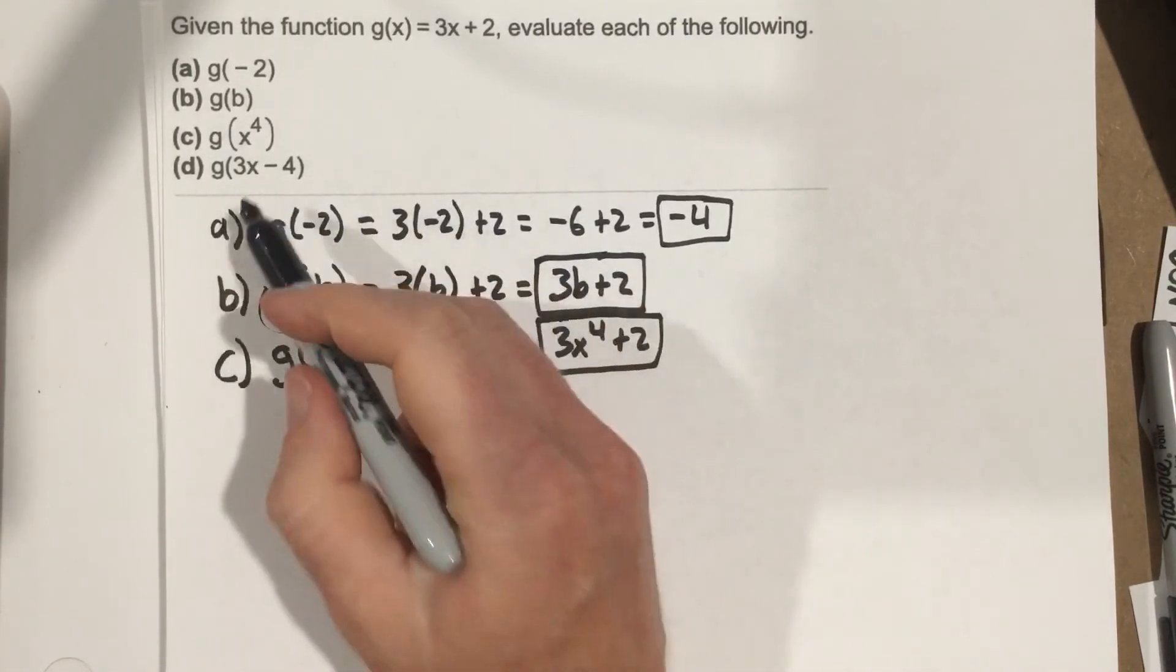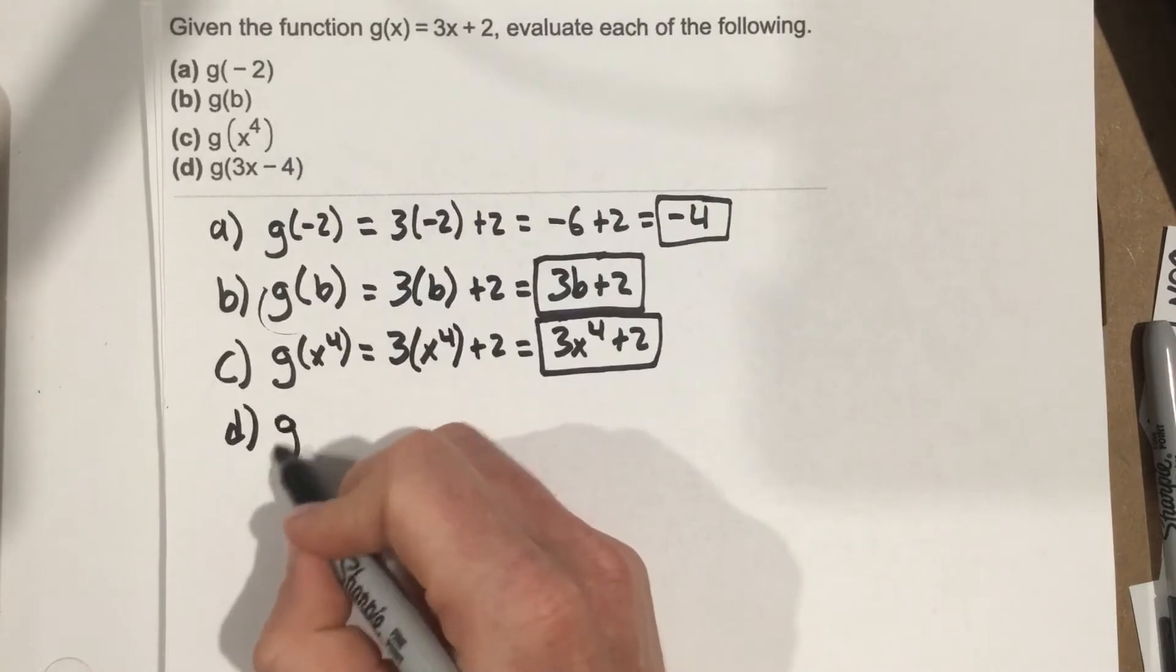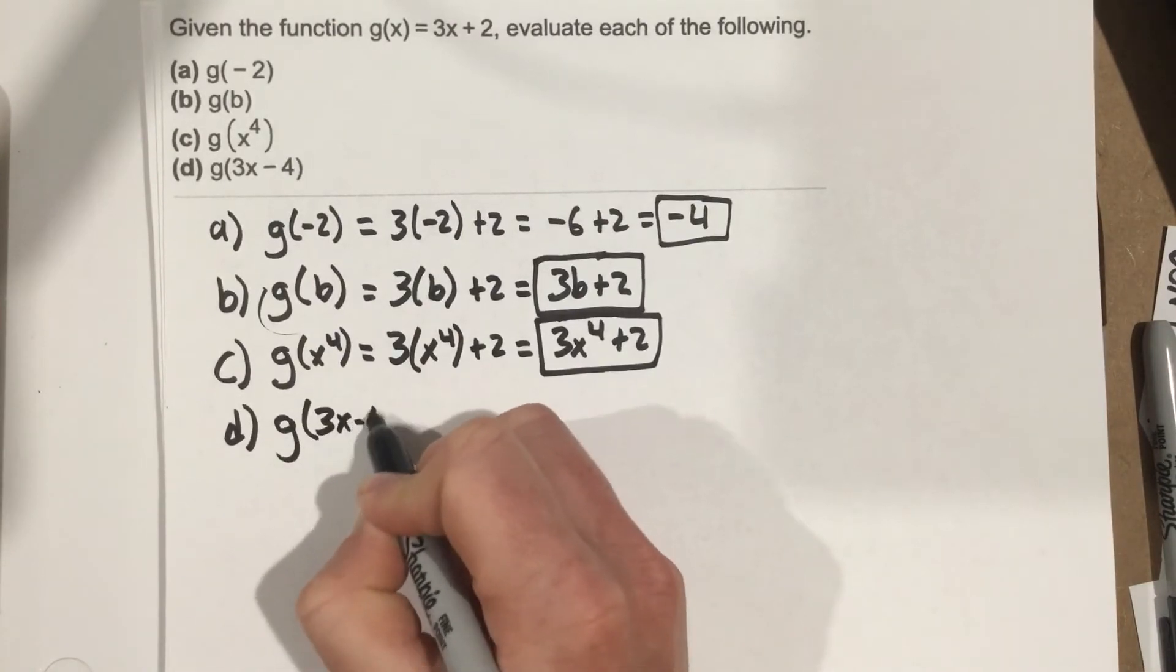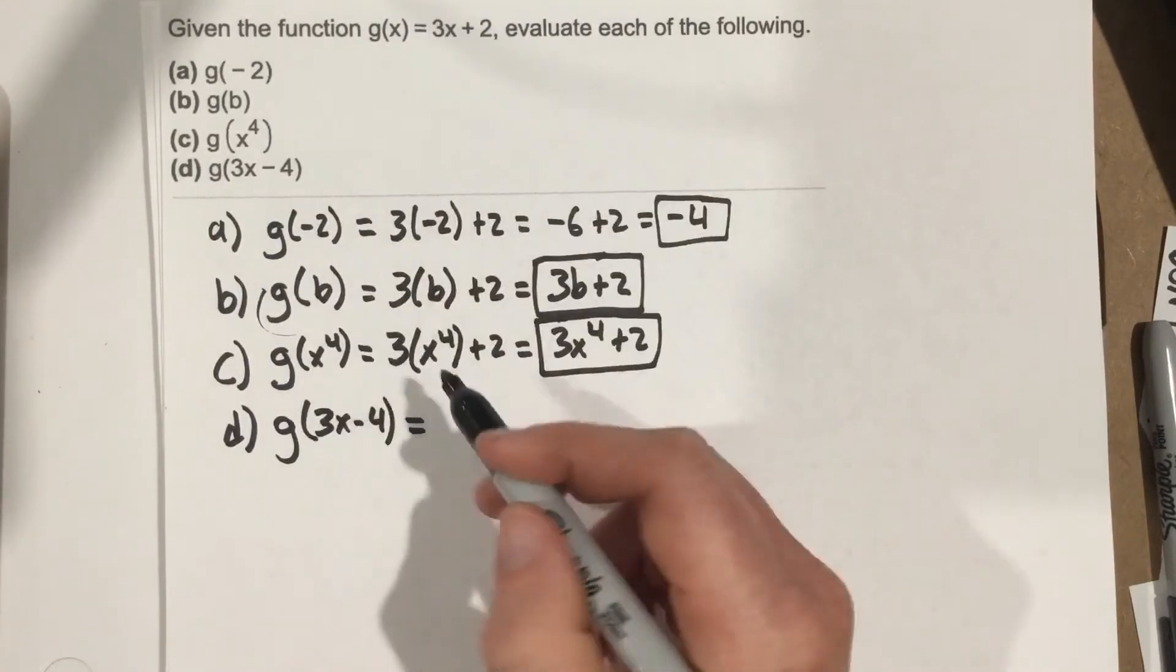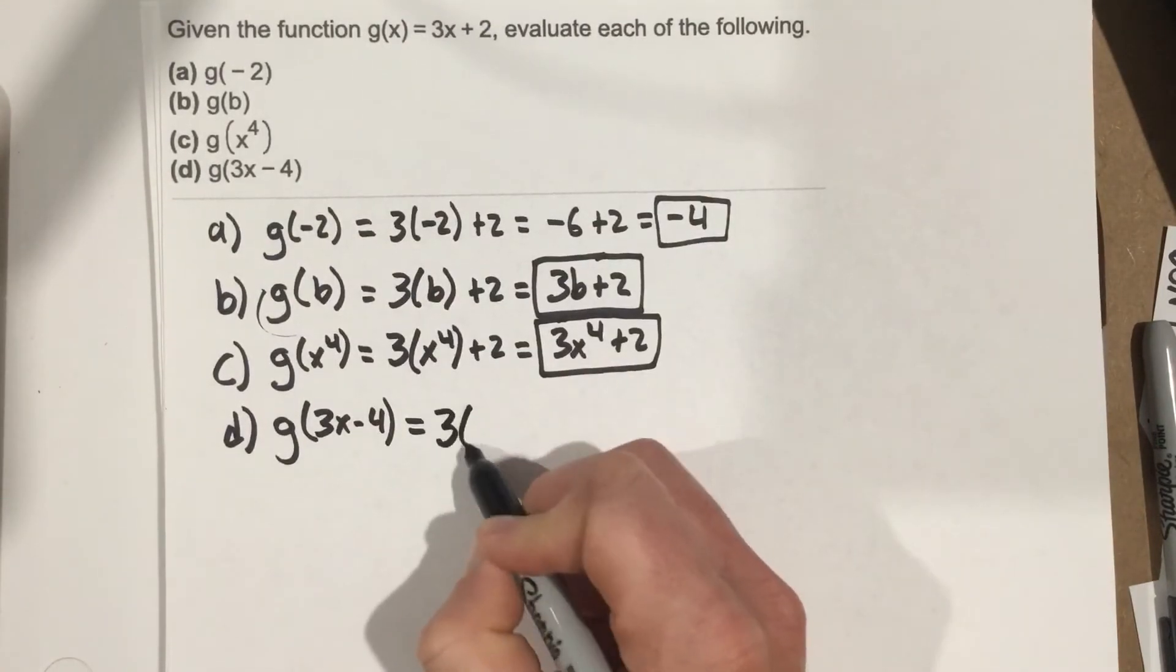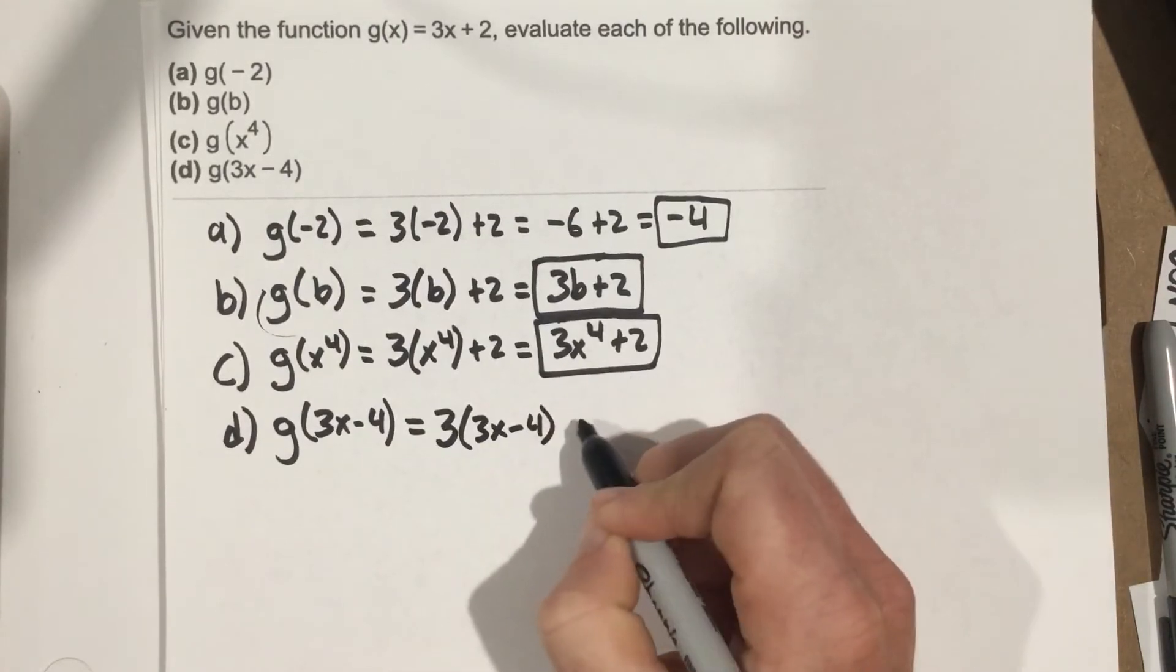And finally, we're going to plug in 3x minus 4. So we get d is g of 3x minus 4. Plugging into the original function, so we're replacing x with 3x minus 4. So that's 3 times 3x minus 4, plus 2.